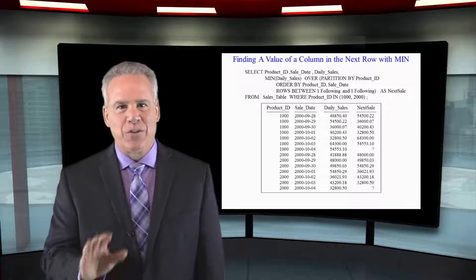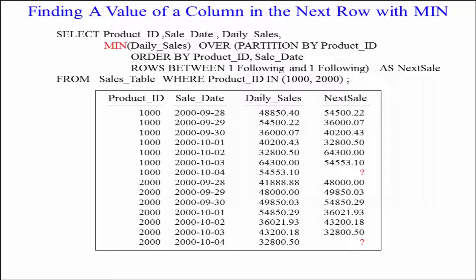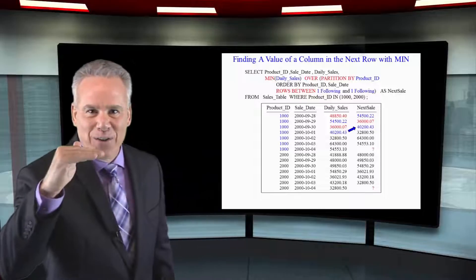Take a look at this little masterpiece — there's a lot to it, so take your time. We're going to do the MIN of daily sales OVER, partitioning by product ID, so we will get a reset. After ORDER BY product ID and sale date, ROWS BETWEEN 1 FOLLOWING AND 1 FOLLOWING — after the sort, we see all the product ID 1000s. On day one we made 48,850.40 — what will be the next row's daily sales? We see the next row is going to have 54,522. Then 54,000, then 36,000, then 40,000. On the same line, it's going to show you today's daily sales and tomorrow's daily sales as well.